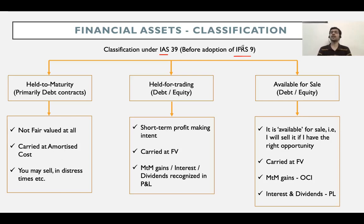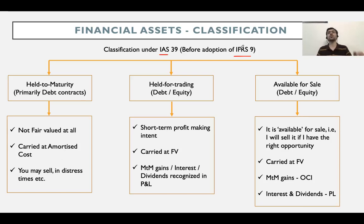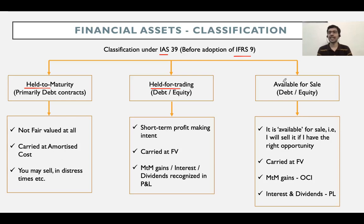Under IAS 39, there were three types of financial assets. You could classify financial assets into one of these three categories: one, held to maturity; second, held for trading; and third, available for sale.